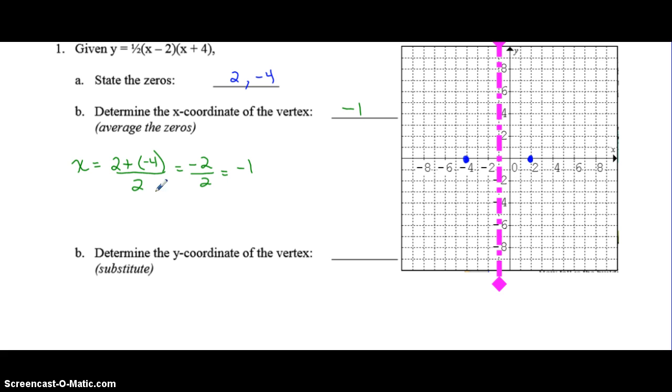To determine the y-coordinate, we're going to take the x-coordinate and we're going to substitute it into the equation. So that's going to be 1 half times negative 1 minus 2 times negative 1 plus 4. So that's half times negative 3 times positive 3. So that's half of negative 9 which is negative 4.5. So that means your vertex would be at negative 1, negative 4.5.